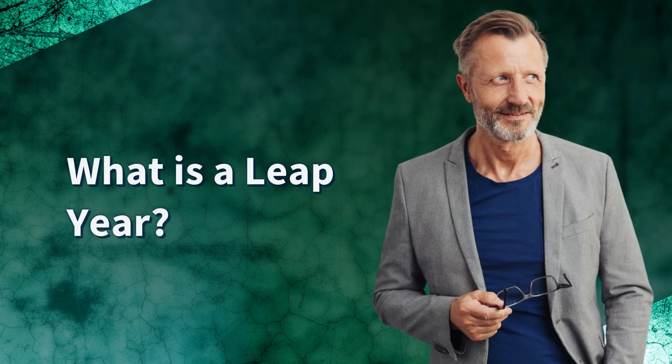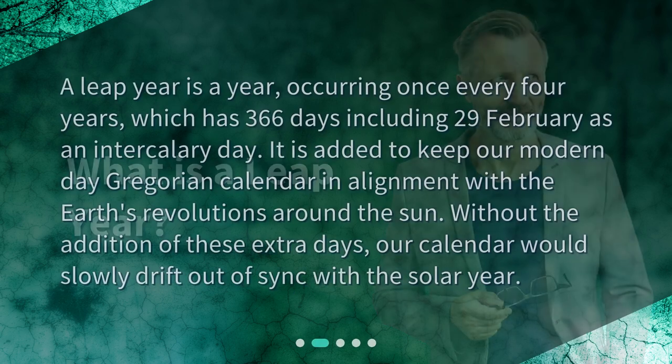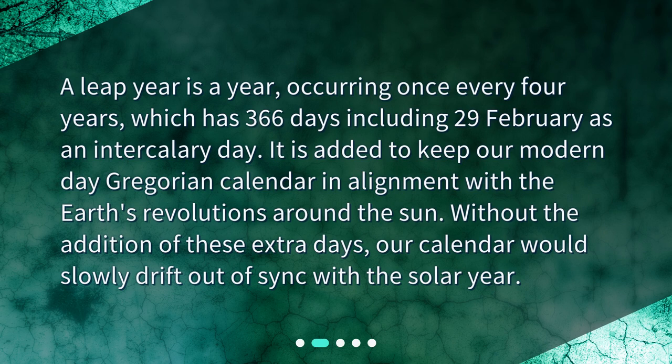A leap year is a year occurring once every four years, which has 366 days, including the 29th of February as an intercalary day. It is added to keep our modern-day Gregorian calendar in alignment with the Earth's revolutions around the Sun. Without the addition of these extra days, our calendar would slowly drift out of sync with the solar year.